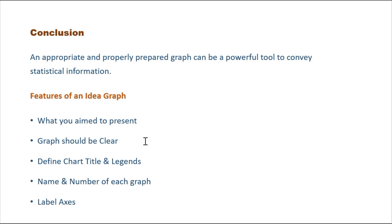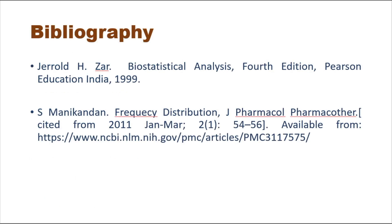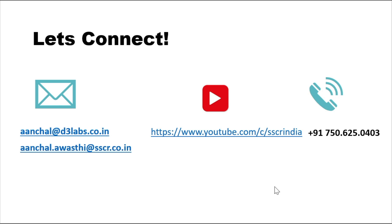To conclude, an appropriate and properly prepared graph can be a powerful tool to convey statistical information. An ideal graph clearly presents what you aim to show. Graphs should be clear, with defined chart titles, labeled regions, a name and number for each graph, and labeled axes — all of which help in understanding clearly. There are also some very good books on graphical representation for further study. If you have any queries, please feel free to connect.